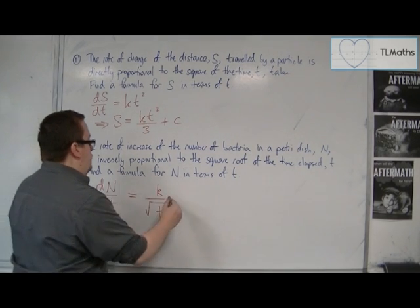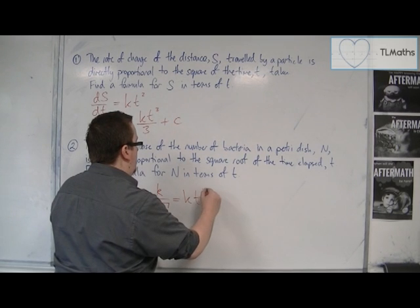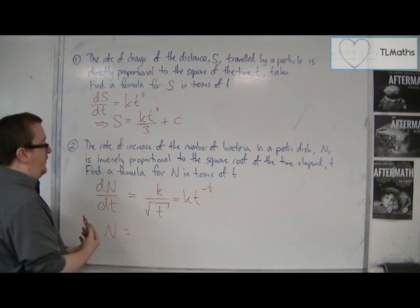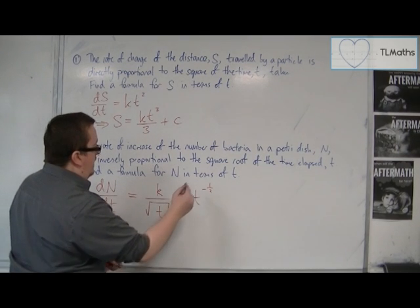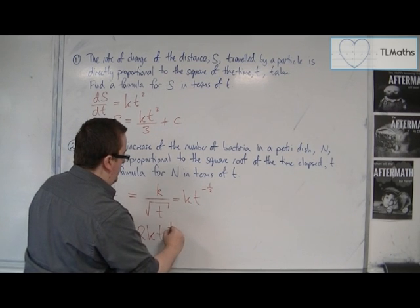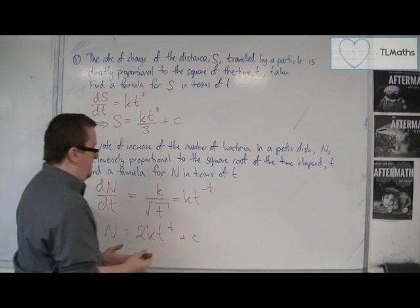That can be written as kt^(-1/2). And so if you integrate both sides, we're going to get kt^(1/2) over 1/2, so 2k√t plus a constant c.